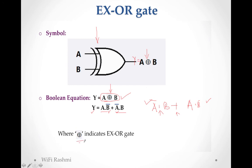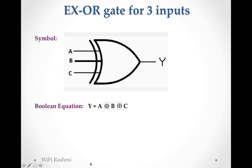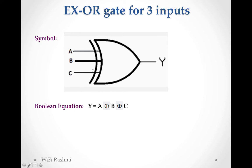Plus with circle indicates XOR gate. Here dot represents AND gate, plus represents OR gate, and bar indicates NOT gate. For 3-input XOR gate, you just pass one more input. So it becomes A XOR B XOR C - the same symbol is extended with a third input.